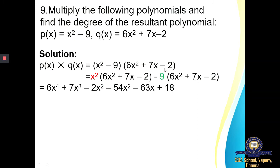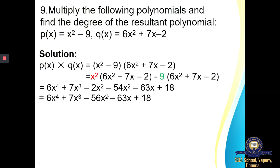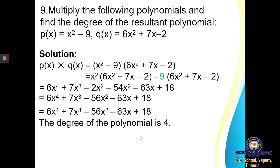Next step: I am supposed to combine the like terms. There is no other term with power 4 or power 3, so they are written as they are. But I can combine the X square terms: minus 2 minus 54 gives minus 56X square. The rest — minus 63X and plus 18 — are written as they are. I have to find the degree of the resultant polynomial, which means the highest degree. The highest degree over here is power 4, so the degree of the polynomial is 4.